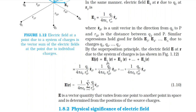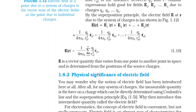By the superposition principle, the electric field E at R due to the system of charges is: E(R) = E1(R) + E2(R) + dot dot EN(R). The total electric field is the vector sum of all individual electric fields. All the values of E1 through EN are substituted in vector form, each with a unit vector. This is written in sigma notation: sum over i from 1 to n of qi over r²iP times R̂iP. Electric field E is a vector quantity that varies from one point to another point in space and is determined from the positions of the source charges.